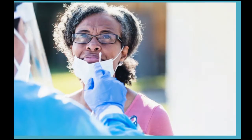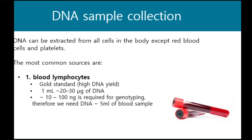You might be familiar with this image of sample collection for the detection of SARS-CoV-2 virus causing COVID-19. In this case, tissue samples were obtained from the nasopharyngeal area where the virus is heavily populated. But for human DNA sample collection, we usually obtain from either blood, buccal cells, or saliva. Other methods may also include dried blood spots. Because DNA resides in the nucleus of a cell, DNA cannot be extracted from red blood cells and platelets.